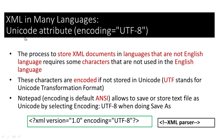XML can be used in many languages, using the Unicode attribute encoding='UTF-8'. The process to store XML documents in non-English languages requires characters not used in English, and these characters are encoded in Unicode. UTF stands for Unicode Transformation Format. So UTF-8 means Unicode Transformation Format-8, and it could also be UTF-16. The prologue declares the XML document version as 1.0 and specifies the encoding UTF-8 for the XML parser.